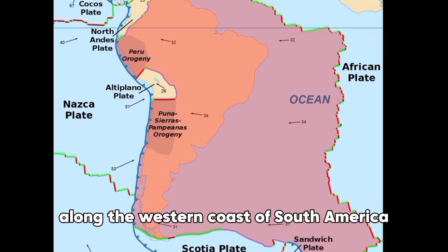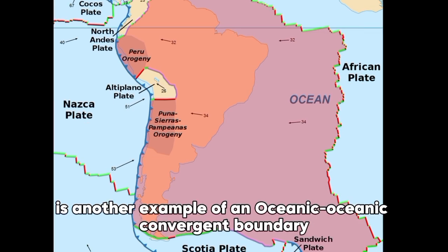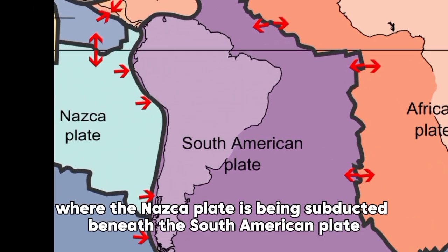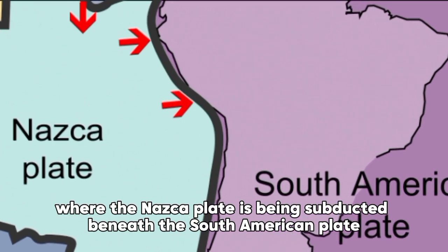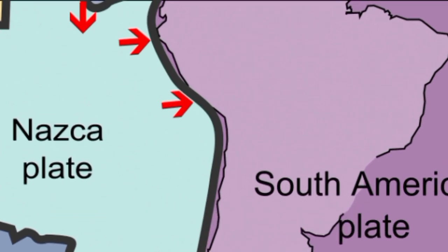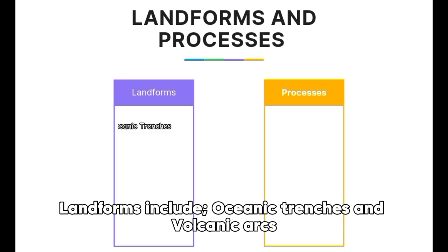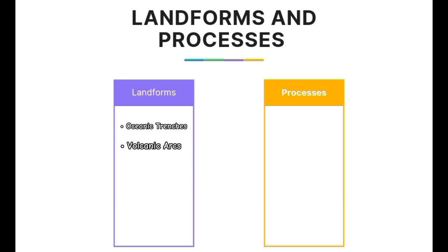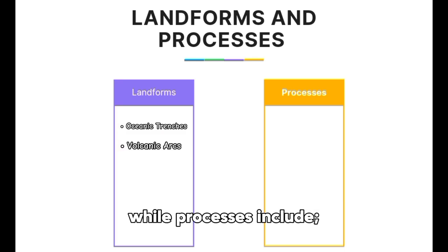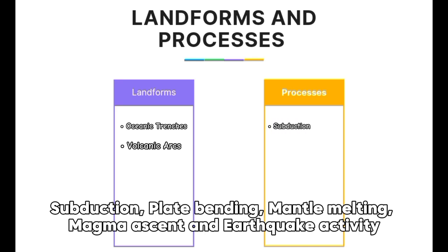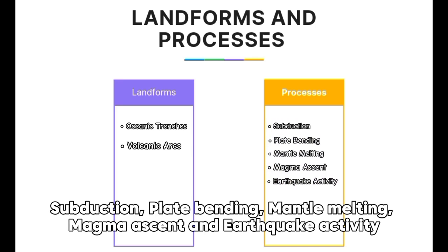Along the western coast of South America is another example of an oceanic-oceanic convergent boundary where the Nazca Plate is being subducted beneath the South American Plate. Landforms include oceanic trenches and volcanic arcs, while processes include subduction, plate bending, mantle melting, magma ascent, and earthquake activity.